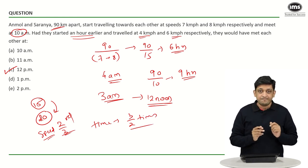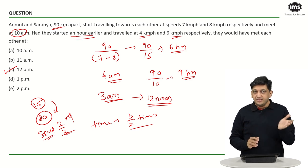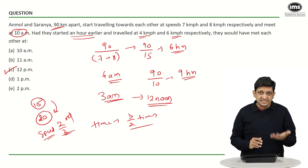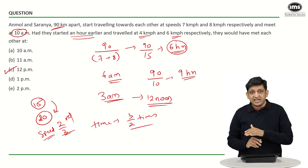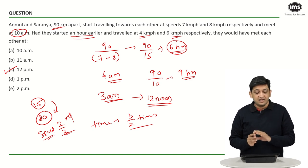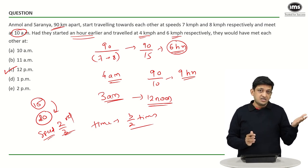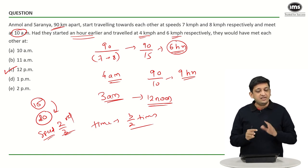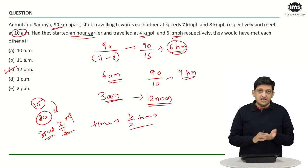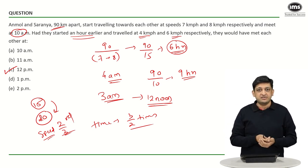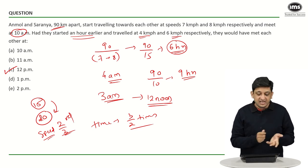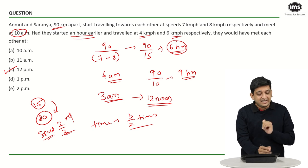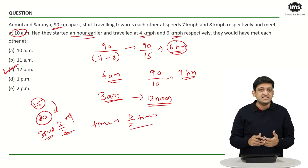If speed becomes two-thirds of the original speed, new time becomes three-halves times the original time, which means if the original time taken is 6 hours, then the new time will be 3/2 into 6, or 9 hours — they would have taken 3 hours more. They have started 1 hour earlier, so out of those 3 extra hours, they have already covered 1 hour by starting earlier. The remaining 2 hours will be adjusted on the other side, meaning if you start 1 hour early, you will reach 2 hours late. That is why if they meet at 10 a.m. in the first case, in the second case they would be meeting at 12 p.m.